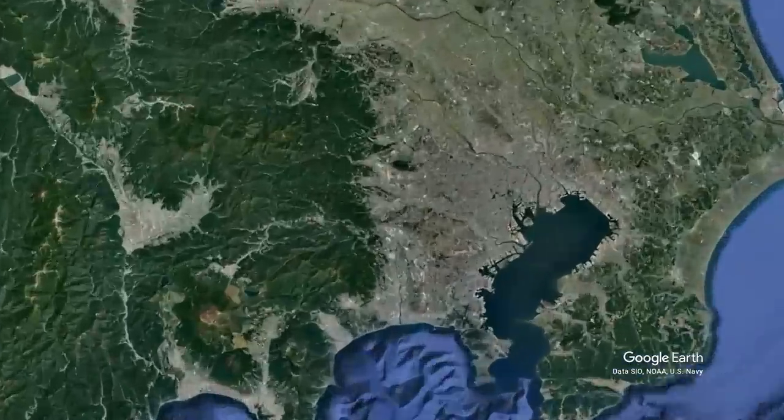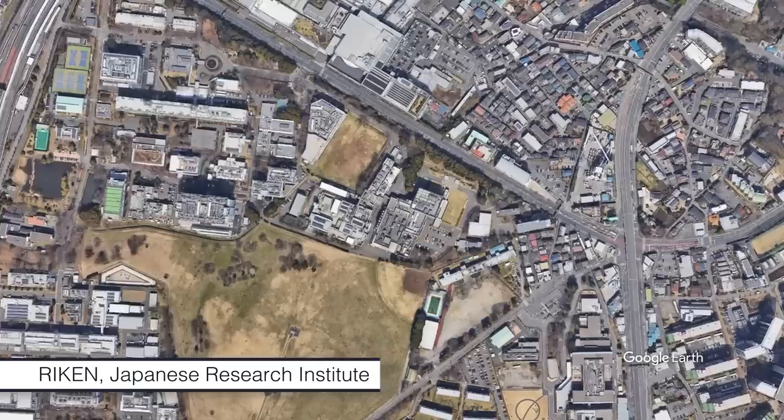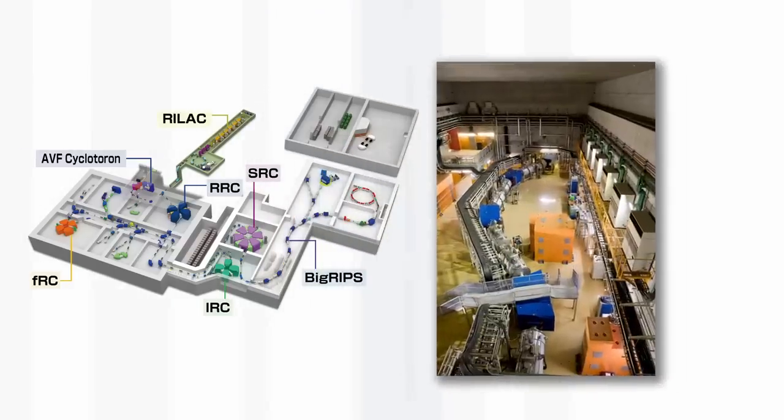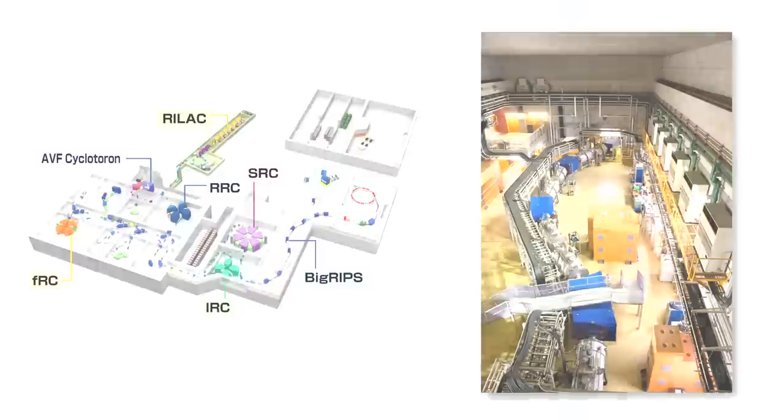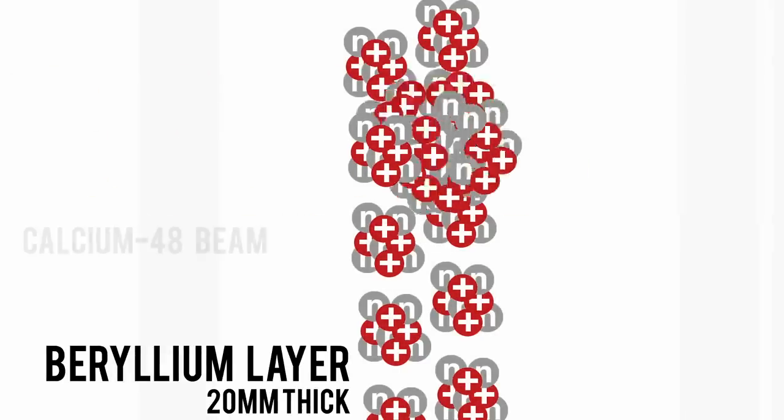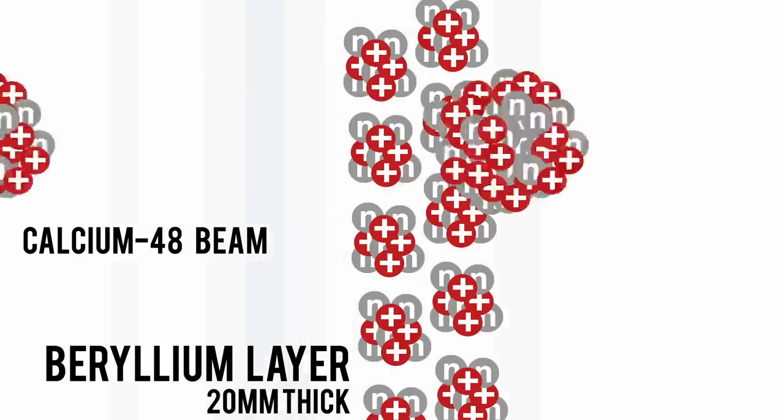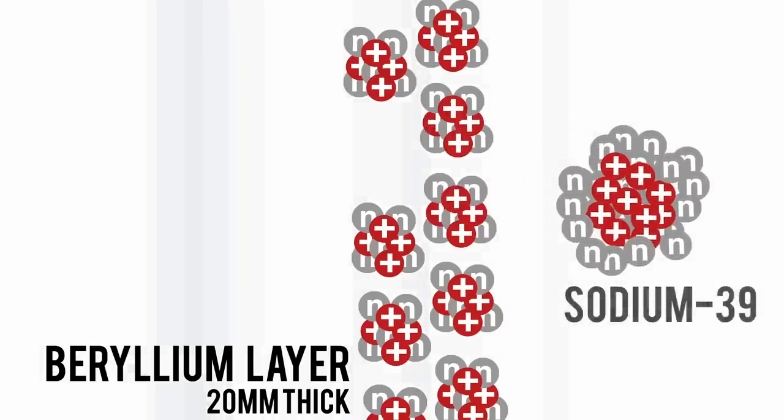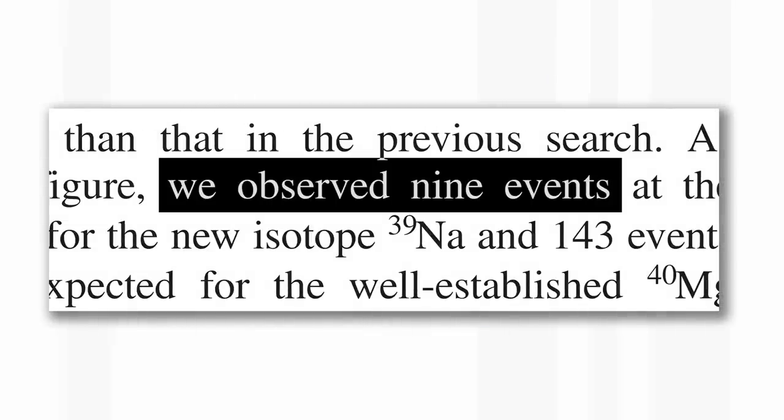It's not easy to make these isotopes. A group in Japan, RIKEN, and a huge group of researchers, you can see all the authors on the paper, have done experiments where they accelerate calcium-48 ions and collide it with the target of beryllium. Instead of trying to add the atomic numbers of the elements together, they're trying to smash things up and look at the atoms that are produced. So over quite a long period of bombardment of beryllium, they managed to observe nine atoms of sodium-39. This is really not a huge number of atoms.